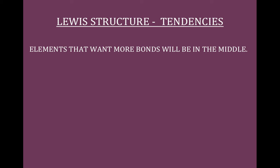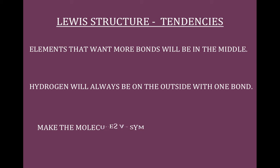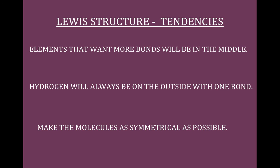Things like carbon — if carbon's around, it's probably going to be in the middle. If nitrogen's around, it's probably in the middle, unless it's bonded to something like carbon. Hydrogen always has one bond, and since it's only one bond it has to be on the outside of a molecule. You're going to try to make molecules as symmetrical as possible — sometimes it's not readily done, but if there's a chance to make it symmetrical, do it; it's probably going to be right.